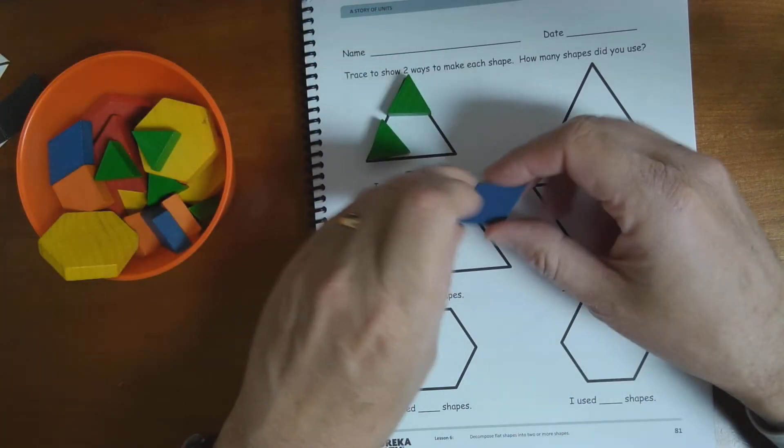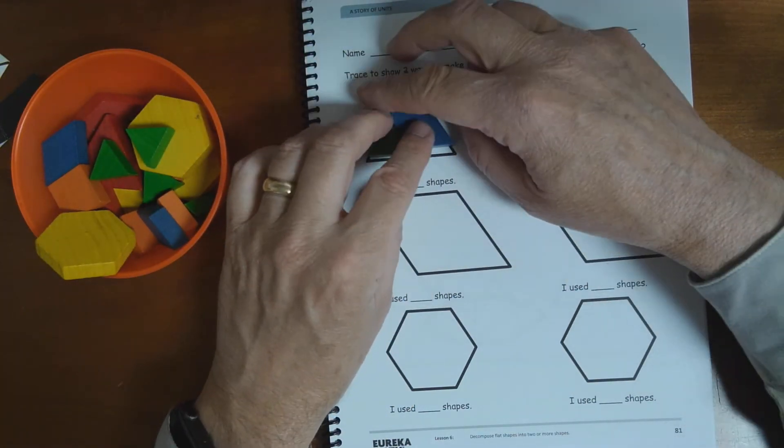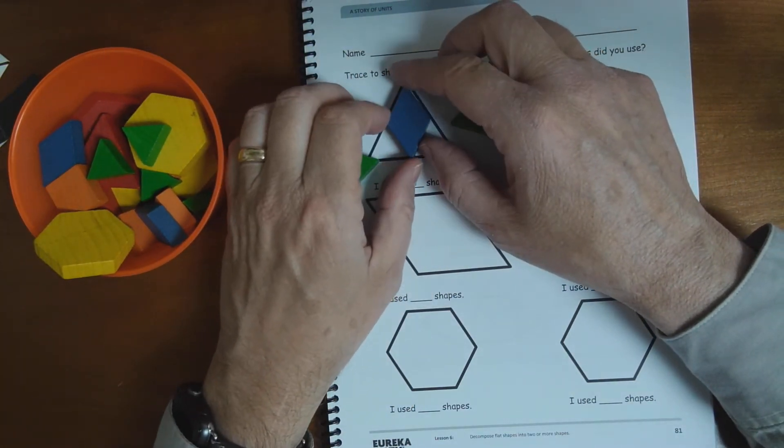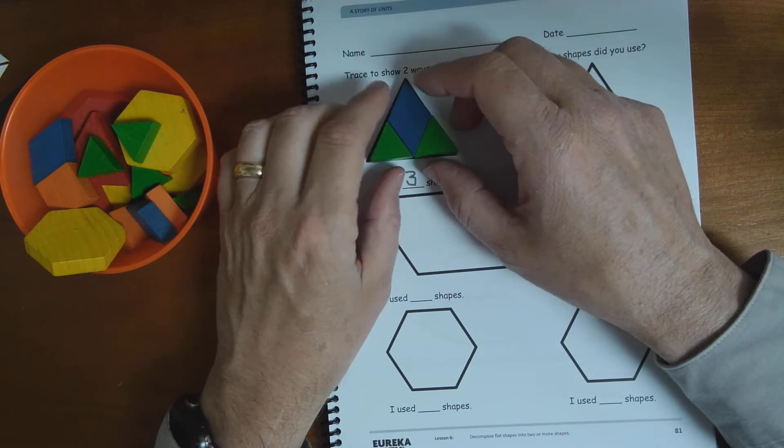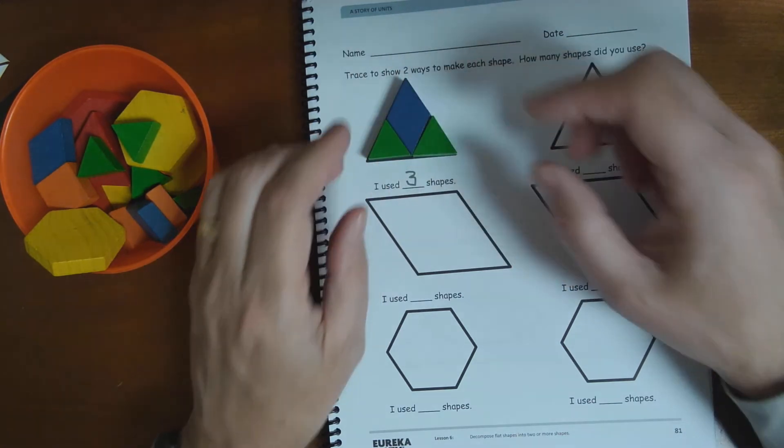But look what I can do here. Or better, maybe if I put it here and here. Now we've got three shapes, right? Okay.